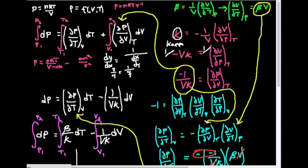This derivative — the partial of P with respect to V at constant T — is exactly what appears in our dP expression. Whenever two things are equal, you're allowed to make a substitution. So wherever I see this partial of P with respect to V at constant T, I substitute negative one over V kappa. The differential element dV doesn't change; I'm just replacing the partial derivative. So that term becomes negative one over V kappa times dV.